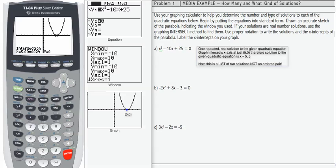So what I've done in the white space at the right-hand side is to identify that the graph intersects the x-axis at only the point 5, 0. Therefore, the solution to the given quadratic equation is the repeated solution 5, 5. Note this is a list of two solutions, not an ordered pair. So we can either say there's two solutions or one repeated. It's kind of the same thing, but one repeated gives you a little bit more information.